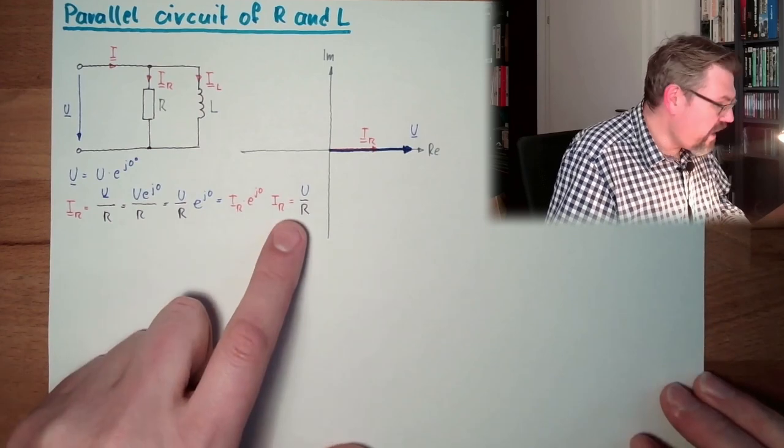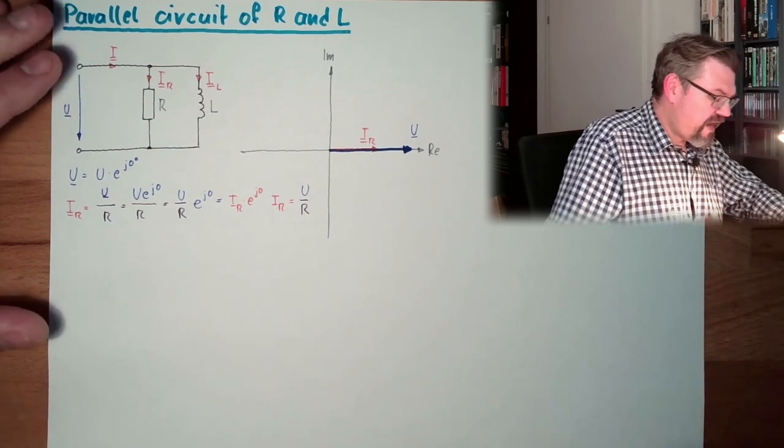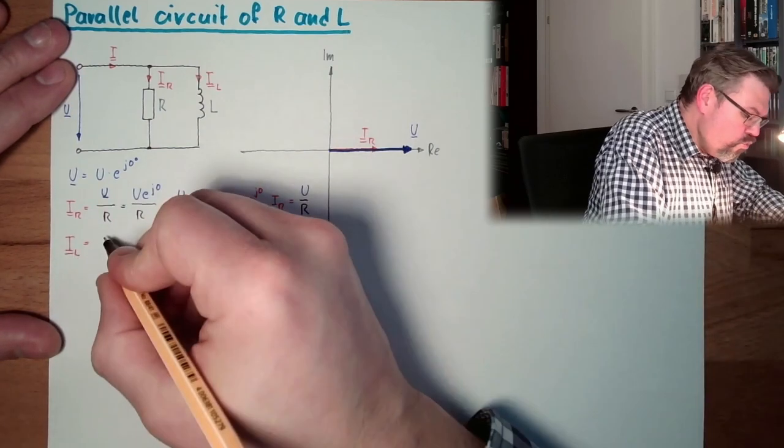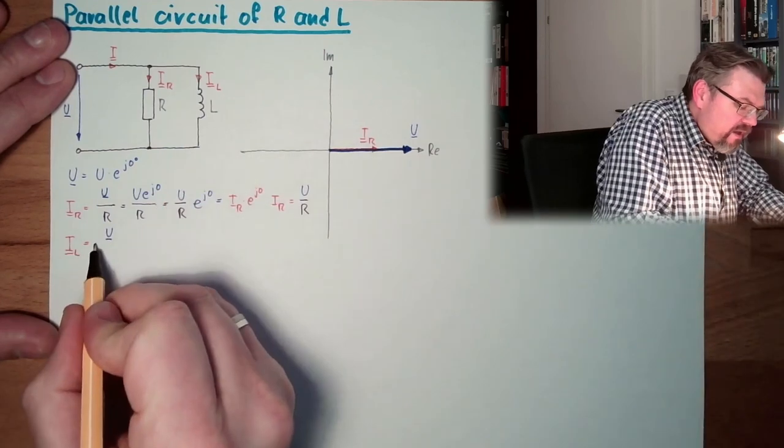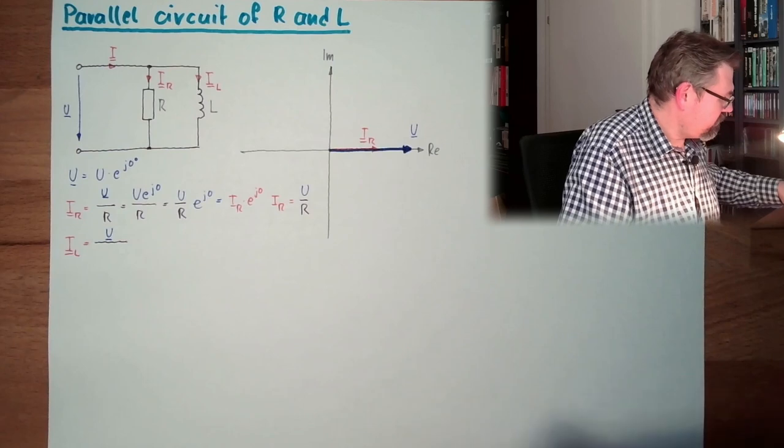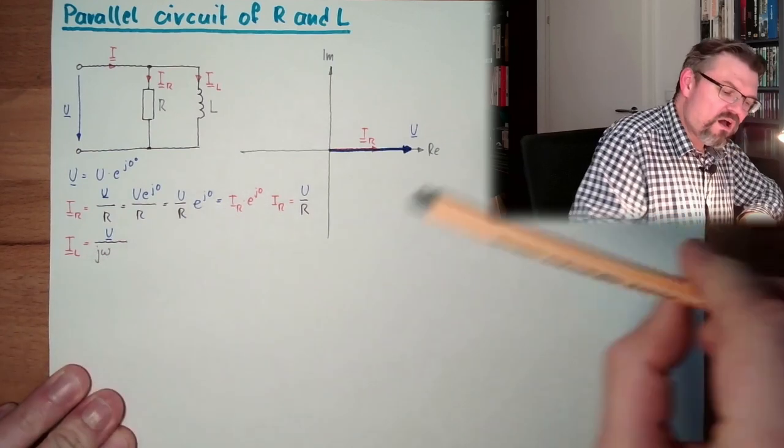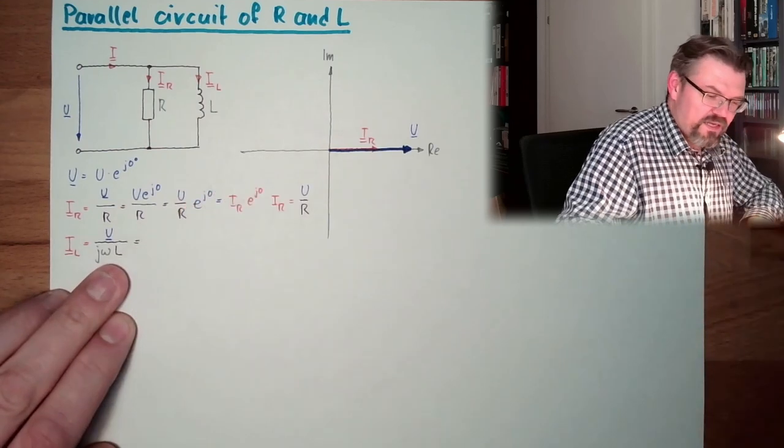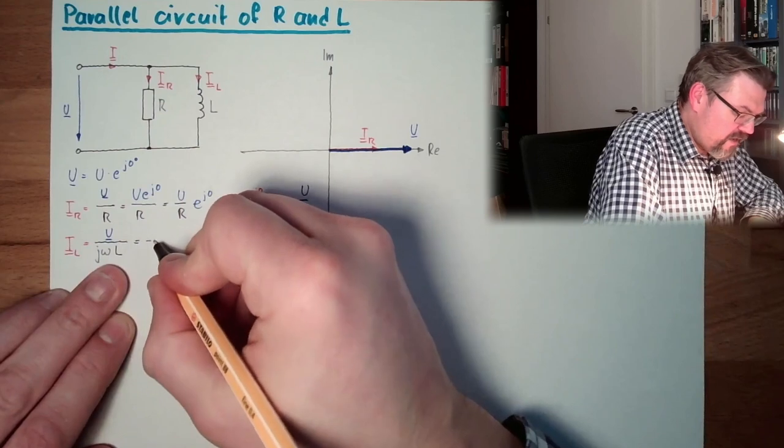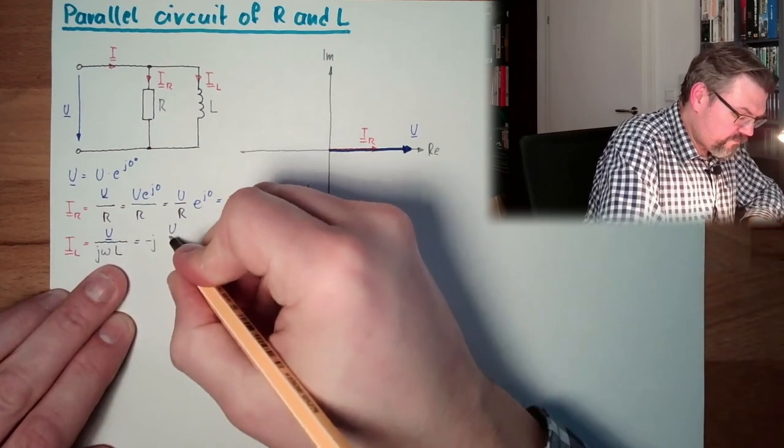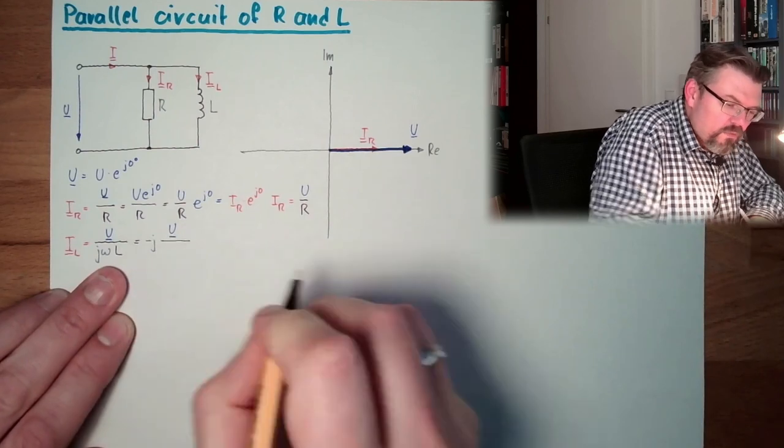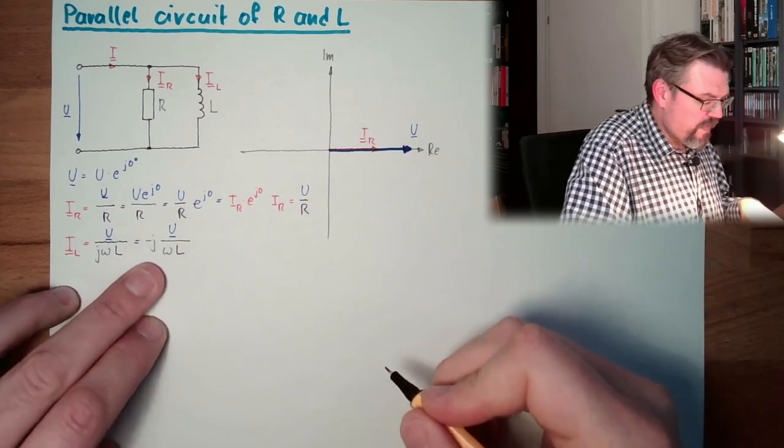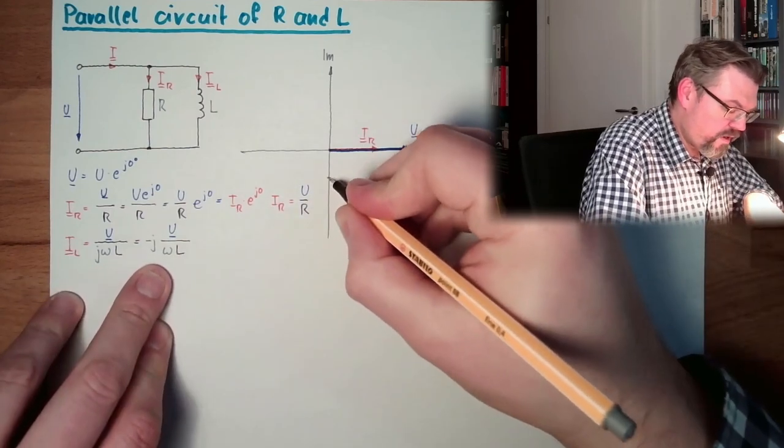So let's have a look at IL, how this is looking. U divided by j omega L, because that's our impedance of our coil. This is exactly the same like minus j U divided by omega L. And let's have a look, what is minus j?